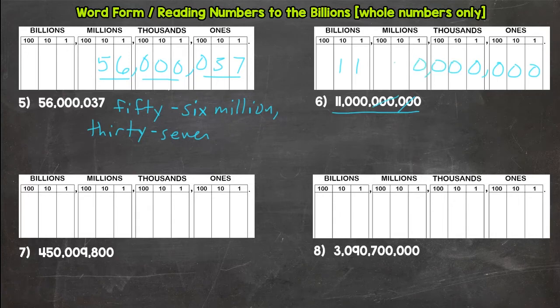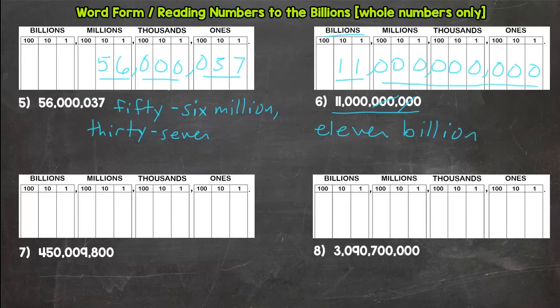That will place us in the billions. So think, how would we read this? First name, first name, last name. Hopefully you said eleven billion, and then nothing else. So we are done—just eleven billion for number six.